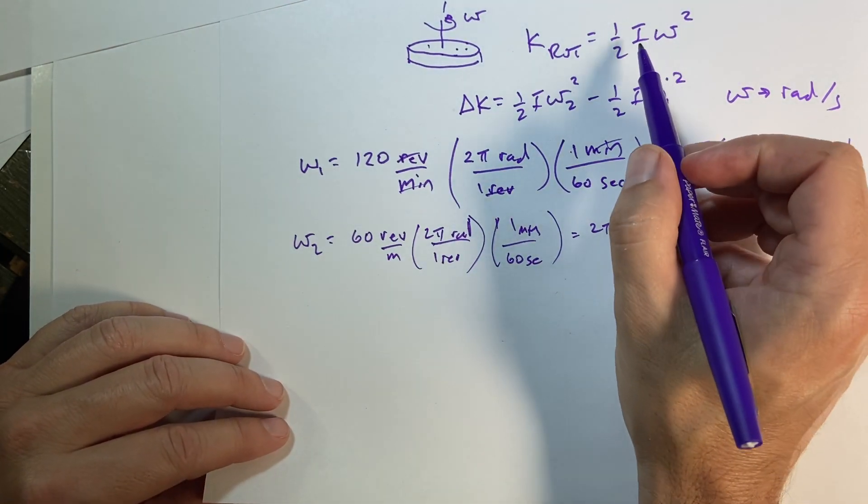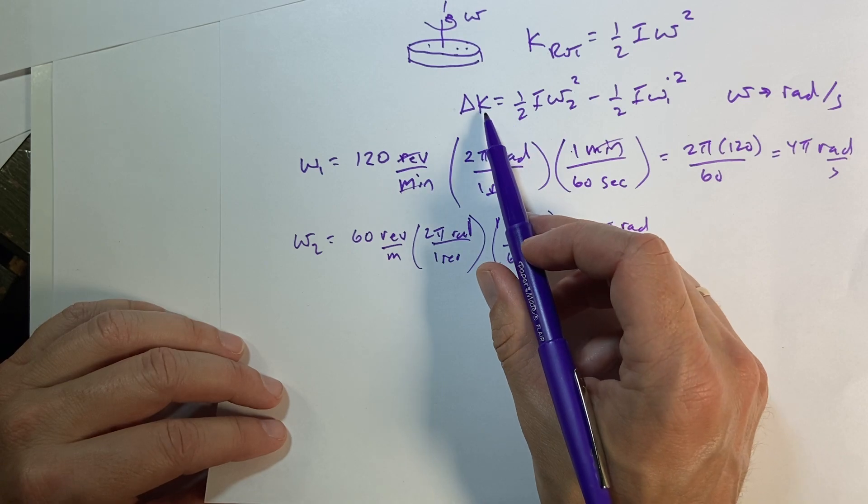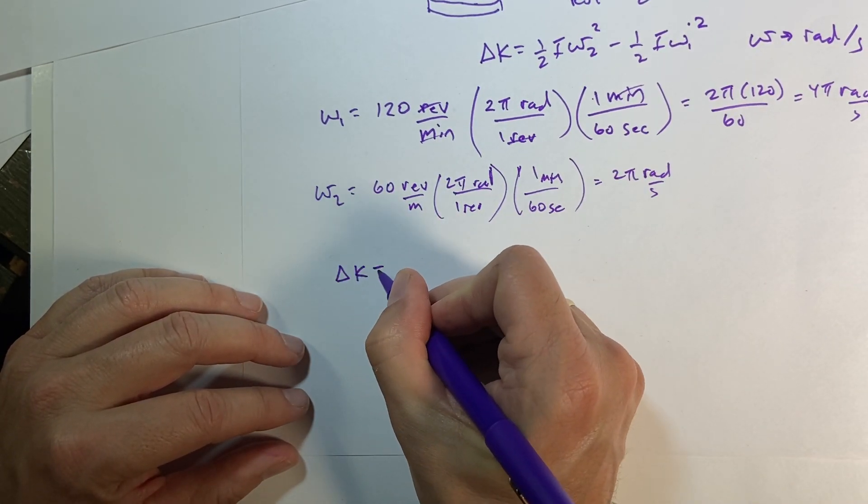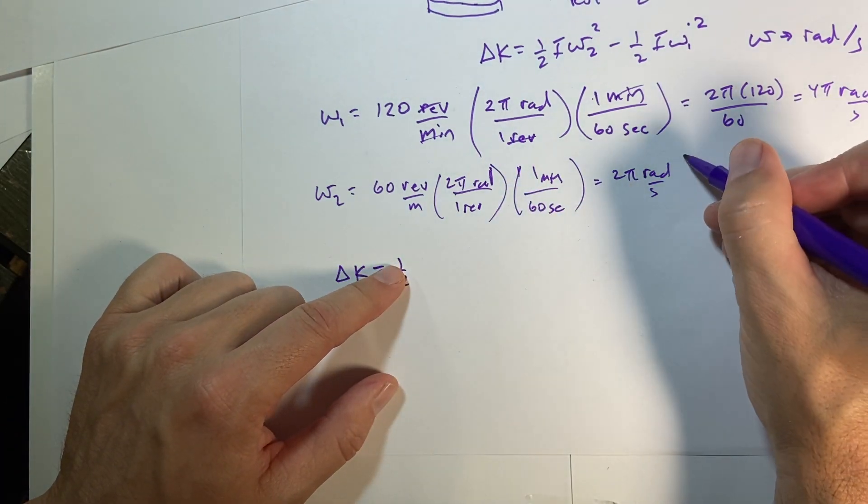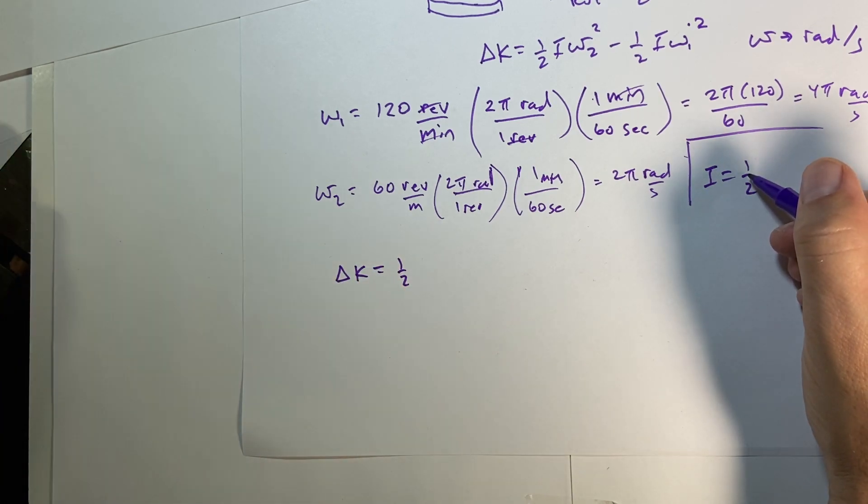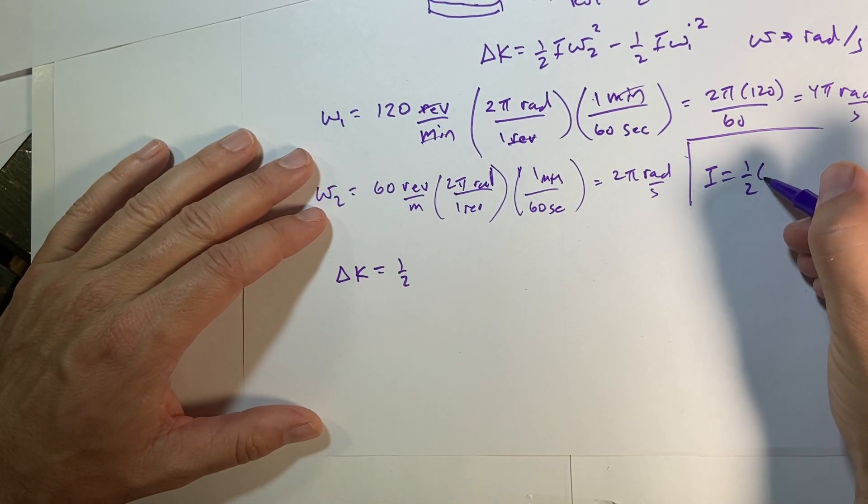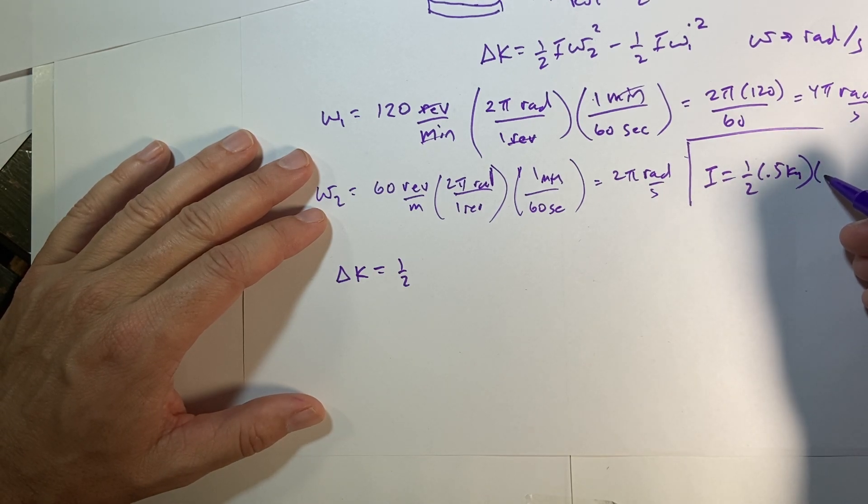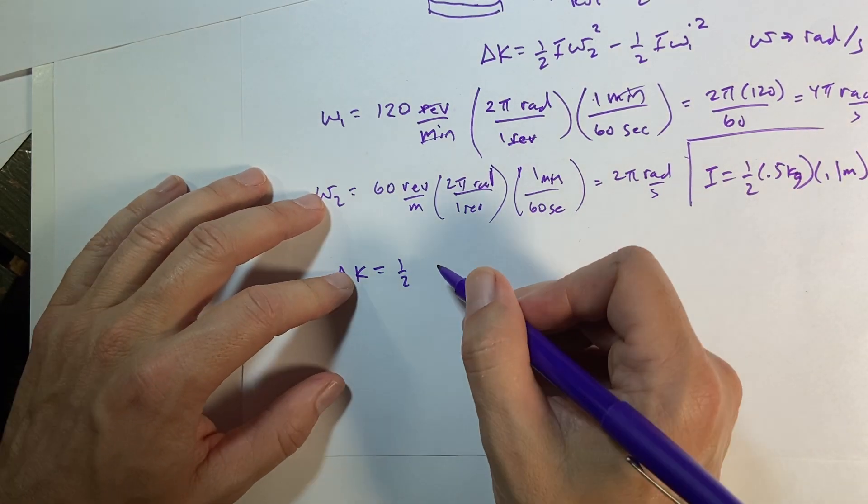So now I can go ahead and calculate the change in kinetic energy. It's just going to be 1 half times I, I guess I should calculate I. I is 1 half m r squared, and the mass was 0.5 kilograms, and the radius was 0.1. That's a kilogram. So I get 1 half,